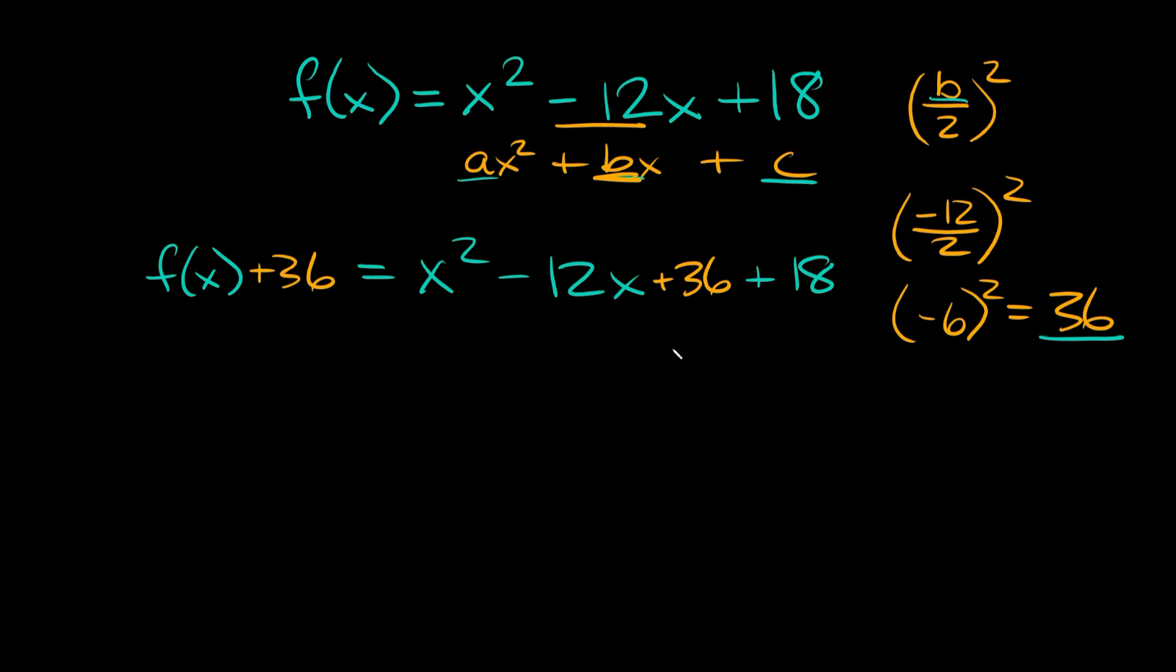Now why do I want to do that? The reason is because now we created something called a perfect square trinomial, and the nice thing about this is we can condense it. So x² - 12x + 36 - we can condense this down into just a binomial that's squared.